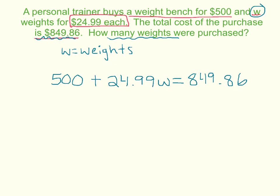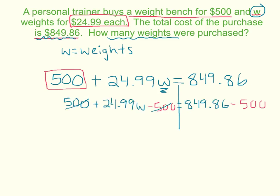So now we want to solve for the amount of weights we would buy to get the total. So to solve, we first want to get rid of this $500. So let's subtract $500 on both sides. And we're left with $24.99 w on the left,